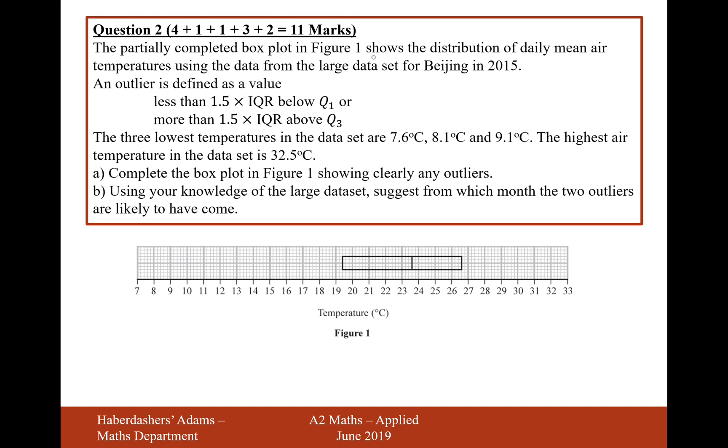The partially completed box plots in figure 1 show the distribution of daily mean air temperatures using the data from the large data set for Beijing in 2015.